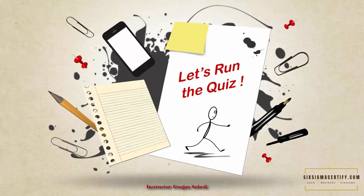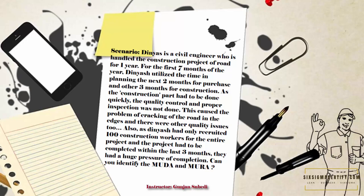Suppose the scenario here is: Dinesh is a civil engineer who is handling the construction project of a road to be completed in one year. For the first seven months of the year, Dinesh utilized the time in planning; the next two months for purchase; and the other three months for construction. As the construction part had to be done quickly, quality control and proper inspection were not done. This caused the problem of cracking of the road and other quality issues. Also, as Dinesh had only recruited 100 construction workers for the entire project and the project had to be completed within the last three months, they had a huge pressure of completion. Can you identify the Muda and Mura?